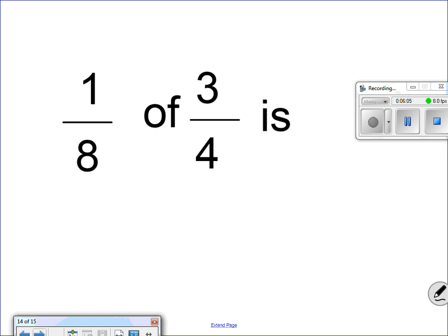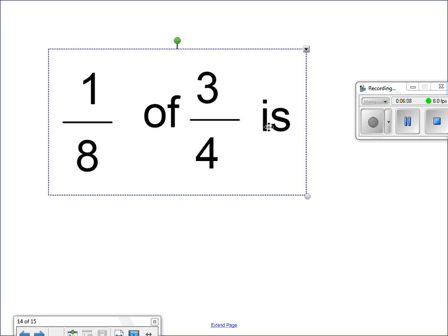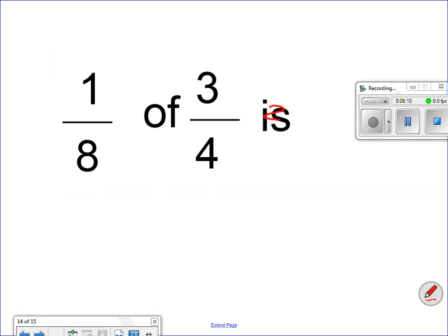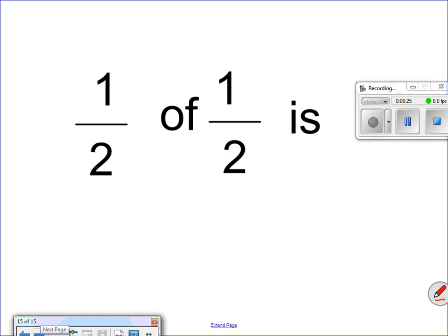1 eighth of 3 fourths is. Once again, of means multiply. 1 times 3 is 3. 8 times 4 is 32. We can't get that any smaller, because 3 can't go into 32. That is our answer. Last problem. 1 half of 1 half is. Change this to multiply. It equals, right? 1 times 1 is 1. 2 times 2 is 4. 1 fourth.